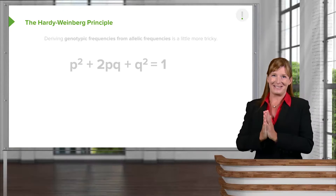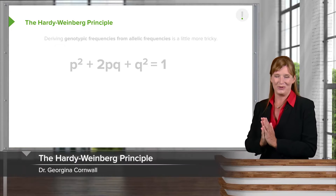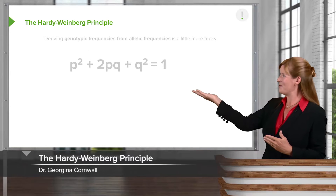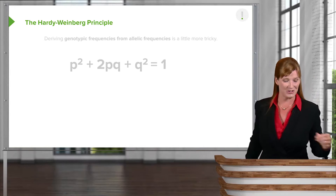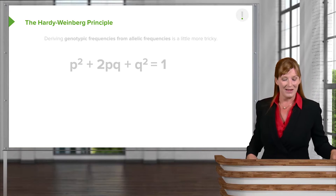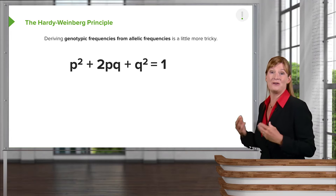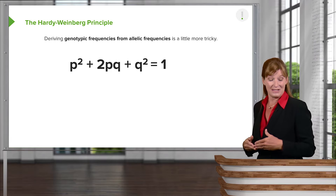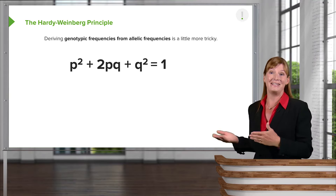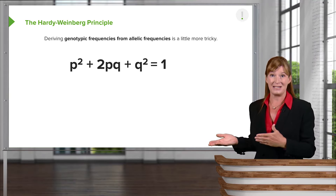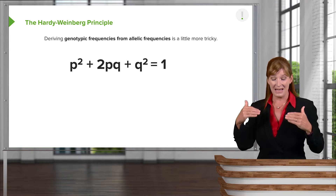Now let's get to the meat of this issue: the Hardy-Weinberg equation. You've seen it before, I'm certain. This is how we're going to derive our phenotypic frequencies, or our genotypic frequencies, from the allelic frequencies that we see in the population.